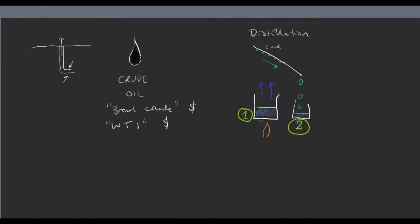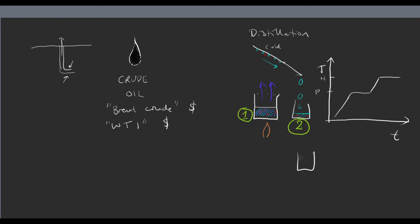So if we just wanted to get the hexane, we would have to first remove the pentane at the temperature that pentane boils at, and then remove the hexane afterwards. So raising the temperature to the boiling point of pentane and waiting for all the pentane to boil off, then going to the boiling point of hexane. I could have two separate beakers — the first would have the pentane that came off at the lower temperature, and the second would have the hexane that came off at the hotter temperature.